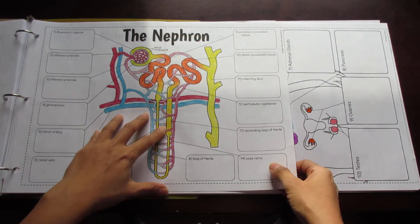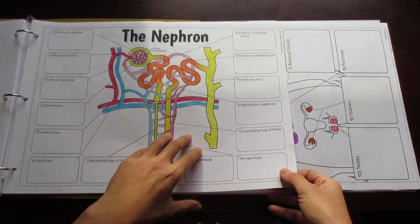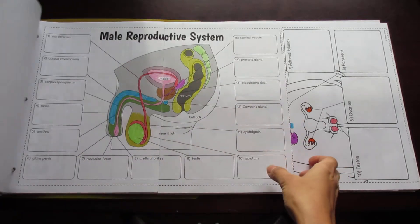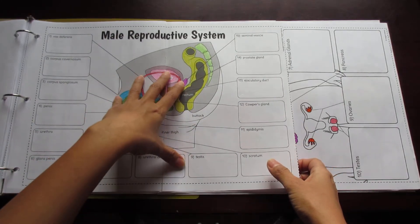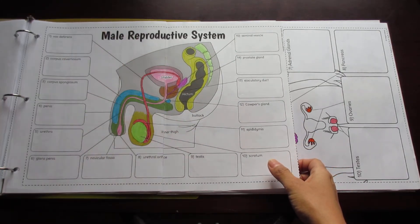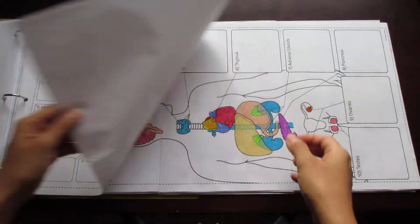You also have the nephron two-pager right here. You have the male reproductive system, which goes really well with the female reproductive system shown earlier.